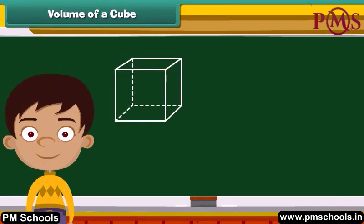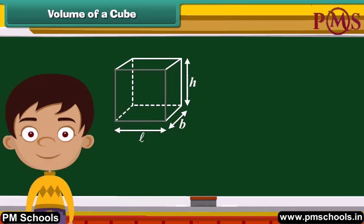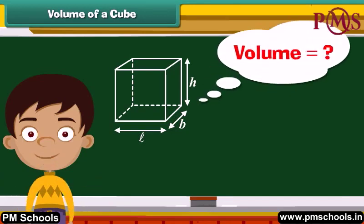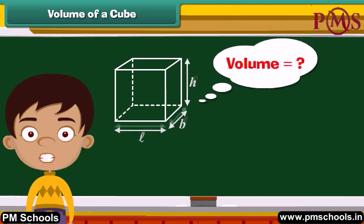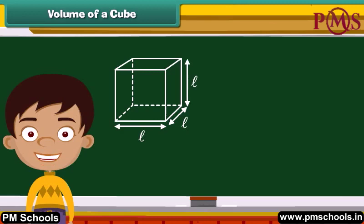This is a cube having three dimensions — length, height, and width. It is like an empty box and has six equal square sides of the same size. How will you measure its volume? First, consider this square with each side of length L. Next, let's change this square into a cube. Note that all the sides of a cube have the same length L.